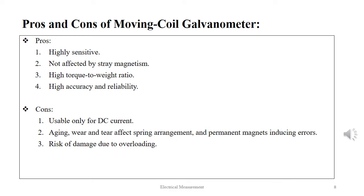The major advantages of a moving coil galvanometer are that it offers high sensitivity, it is not affected by stray magnetism, it offers a high torque-to-weight ratio, and it offers high accuracy and reliability. The disadvantages are that it is only able to measure DC current, ageing and wear and tear affect the spring arrangement and the permanent magnet inducing error, and the risk of damage is high due to overloading.